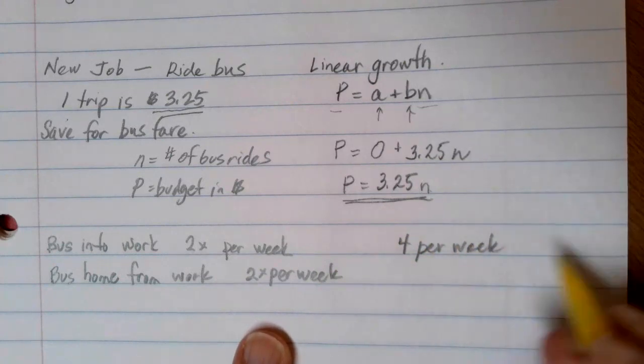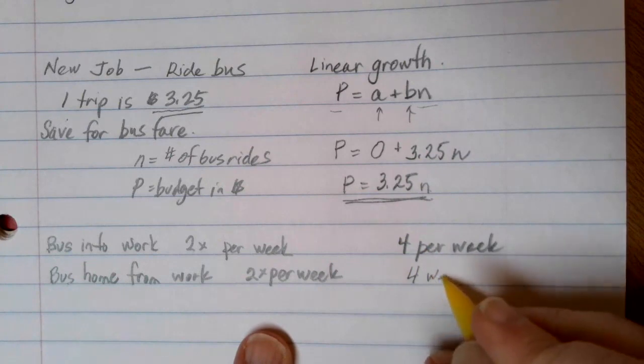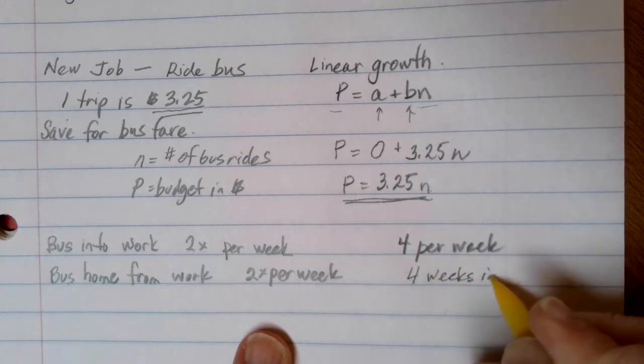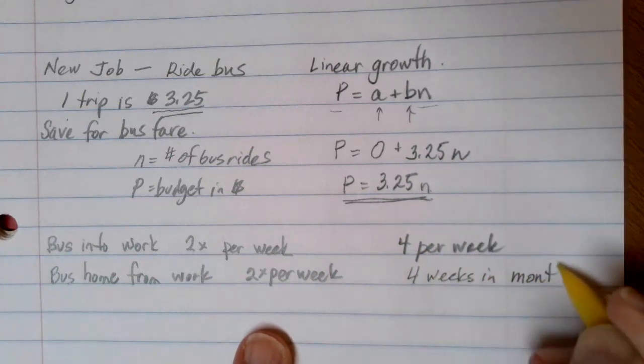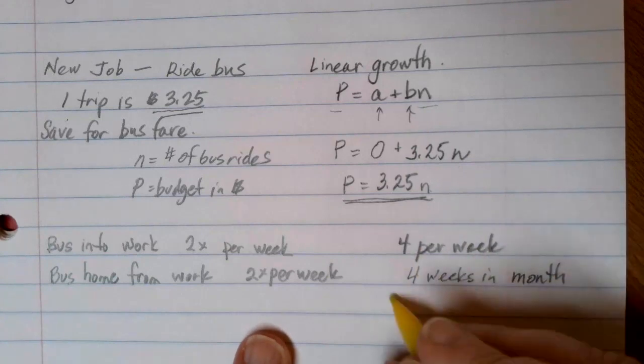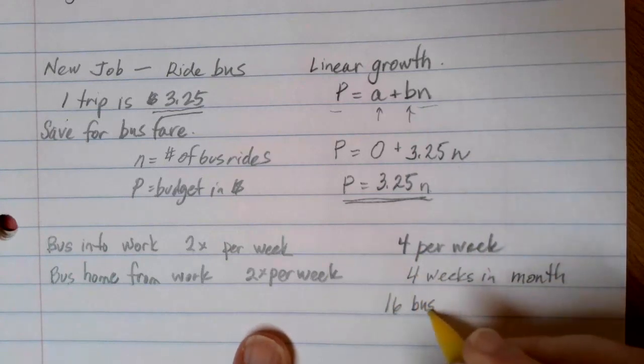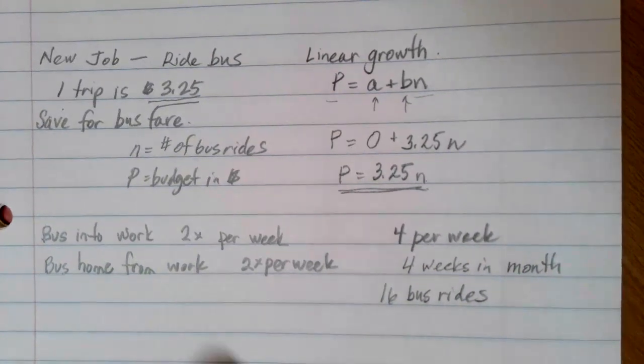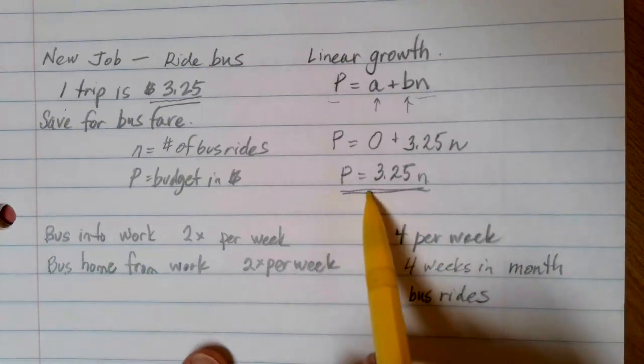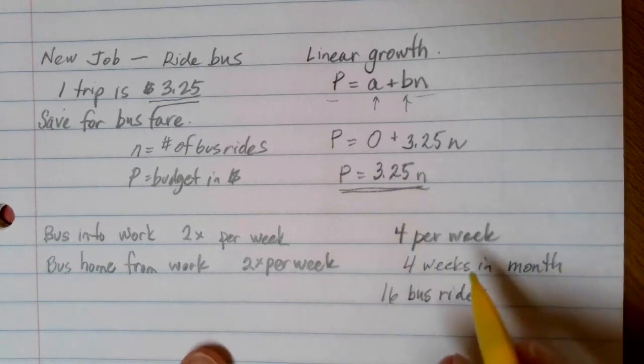And if we're doing a monthly budget, let's go ahead and assume that there's four weeks in the month. So this is going to give me a total of 16 bus rides in a single month that I would have to use to make my budget.